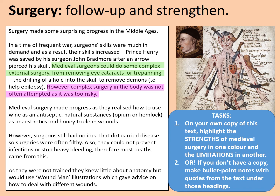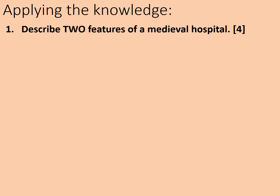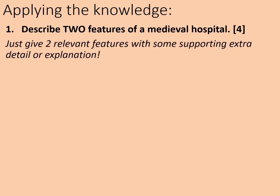Surgery wasn't all bad news, but it should be realised that the deeper they had to cut, and the longer the operation, the more dangerous it was for the person. Now let's apply this knowledge to an exam-style question: describe two features of a medieval hospital. To answer this, just give two relevant features with some supporting extra detail or explanation. In the exam, you'll even be given two little boxes — Feature 1 and Feature 2. It's only four marks, so spend only five to six minutes completing this. Pause the video while you attempt this question.